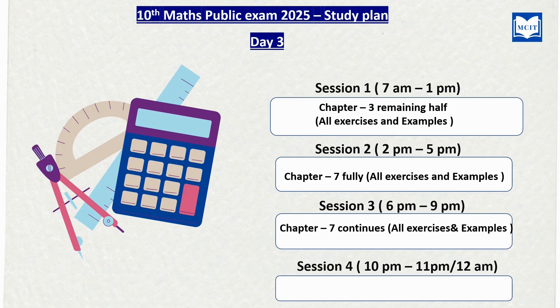You will work through Chapter 7, which covers volume and surface area calculations in detail, including decimal values. You will work it out carefully. In Session 2, you will complete Chapter 7 fully. In Session 4, you will revise the Day 3 content — re-reading and recalling what you studied throughout Day 3.